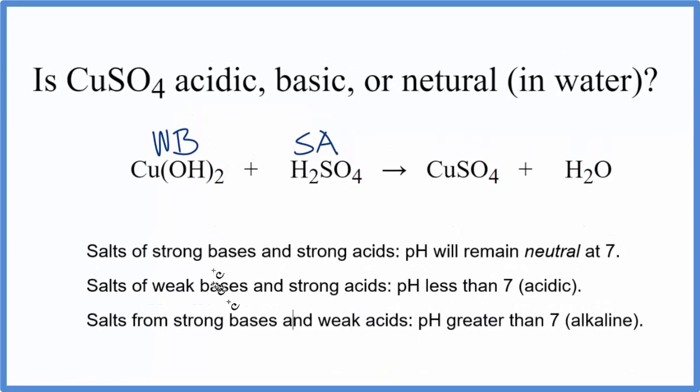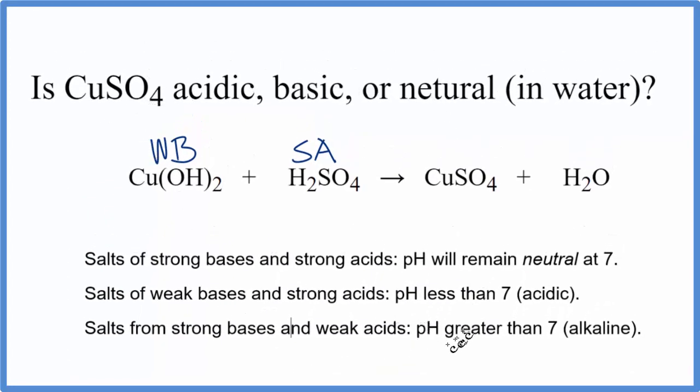So now let's use these rules to see whether CuSO4 is acidic, basic, or neutral. We're looking, we have a weak base and a strong acid. So here's a weak base and a strong acid. That means when we have this reaction, the resulting solution with the CuSO4 dissolved in the water, pH will be less than seven. So it's going to be acidic.